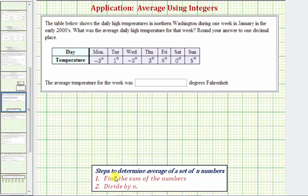In general, to find the average of a set of n numbers, we find the sum of the numbers and then divide by n, where n is the number of values or number of numbers.